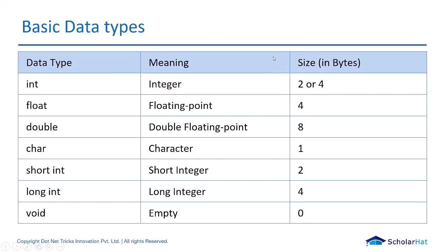According to your machine — for example, on a Mac, the integer data type with the sizeof operator can show two bytes, whereas on a 64-bit Windows machine it can show four bytes of memory. So size can vary according to the operating system. Generally we take four bytes for integer. Float is a floating point — it will have decimals and is four bytes. Double is a double floating point used for larger numbers, and is eight bytes.